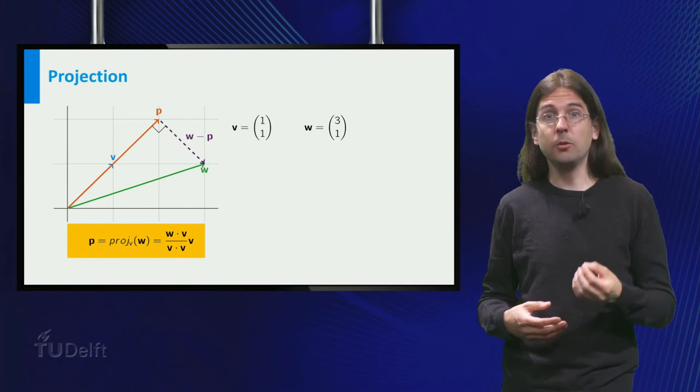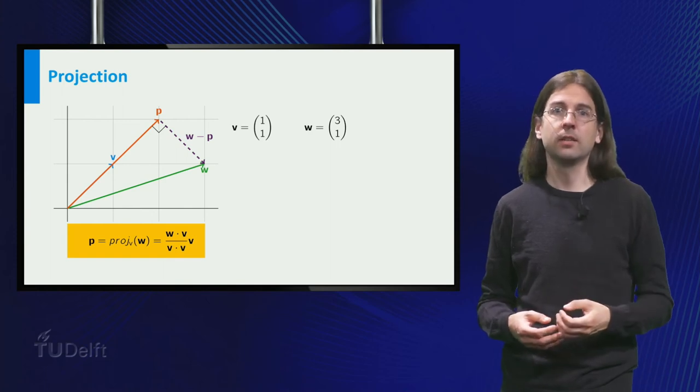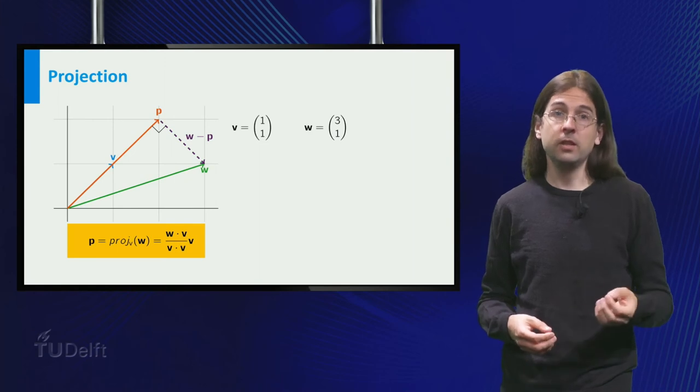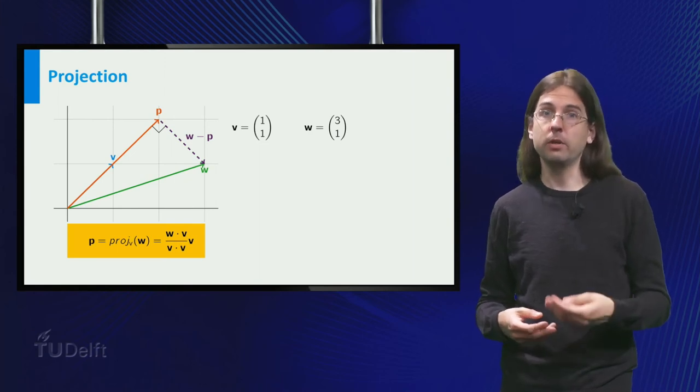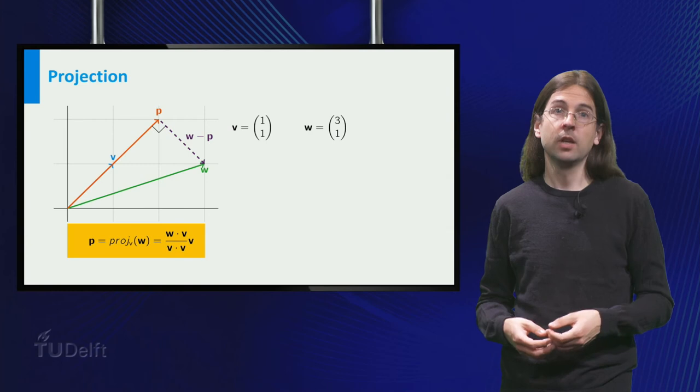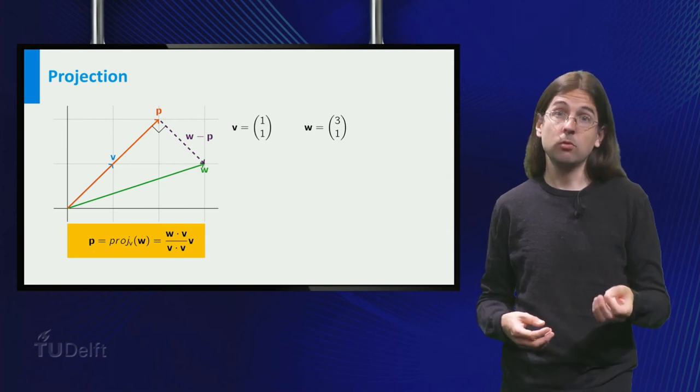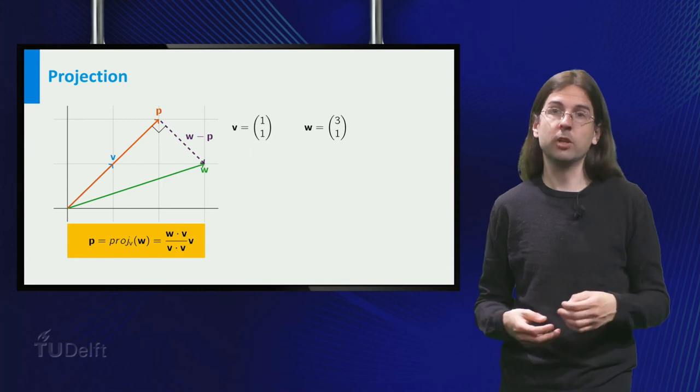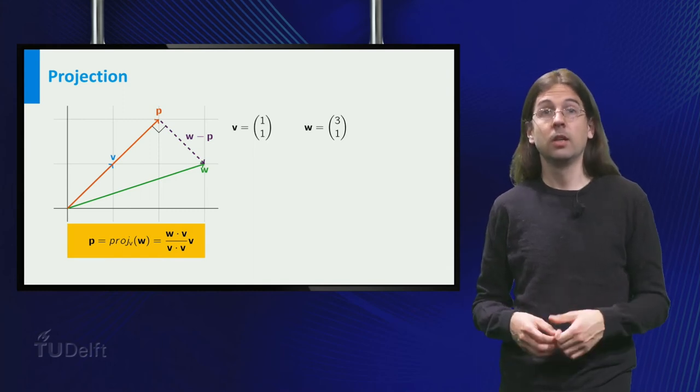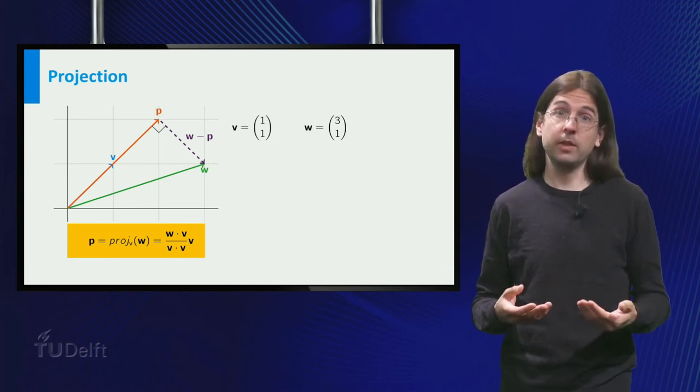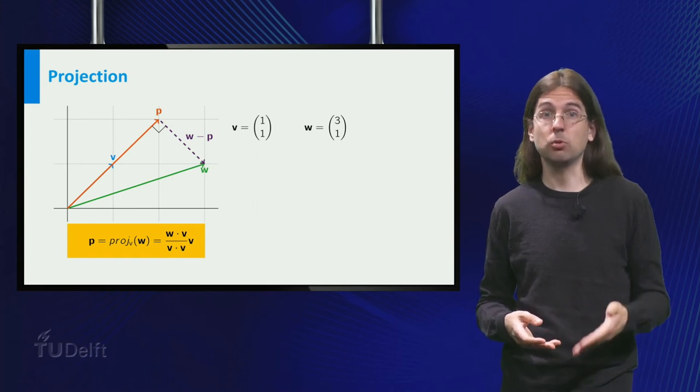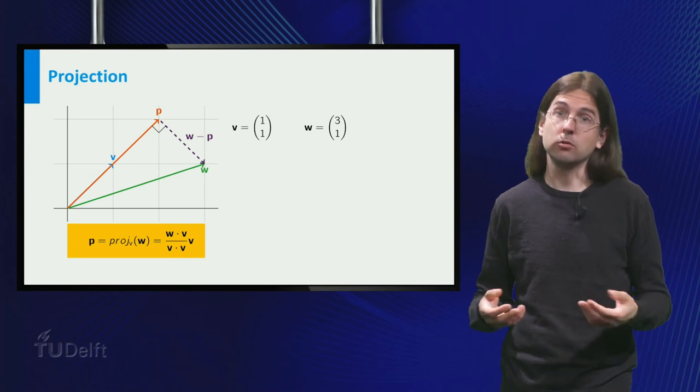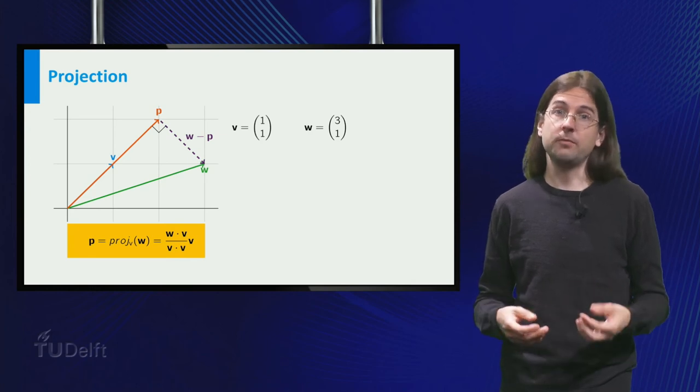At first sight this formula is a bit hard to understand, so let us do an example. Consider the vectors v equals (1,1) and w equals (3,1). Then the projection of w onto v equals the dot product of v and w, which is 3 plus 1 equals 4, divided by the dot product of v with itself equals 1 plus 1 equals 2, times v, so 2 times v, which is the vector (2,2).